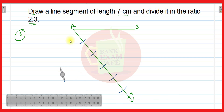So here you get five points — 1st, 2nd, 3rd, 4th, and 5th — at equal distances. Name them as A1, A2, A3, A4, and A5. So AA1 equals A1A2 equals A2A3 equals A3A4 equals A4A5.